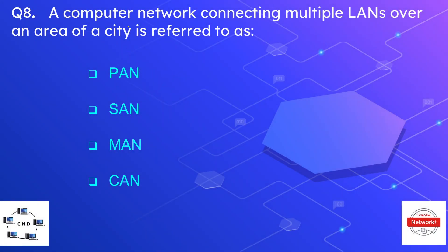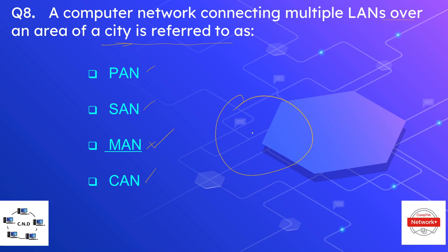Question number eight: a computer network connecting multiple LANs over an area of a city is known as — options are PAN, SAN (storage area network), MAN, and CAN. The correct option is MAN — when a network spans over a city, it is called a MAN or metropolitan area network.